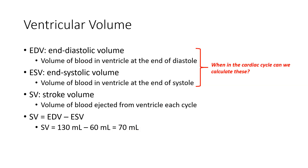Let's talk about some ventricular volumes. We can speak about the volume in the ventricle at different phases during the cardiac cycle. The end diastolic volume is the amount of blood that has filled into the ventricle at the end of diastole — so this is at the end of the filling phase.